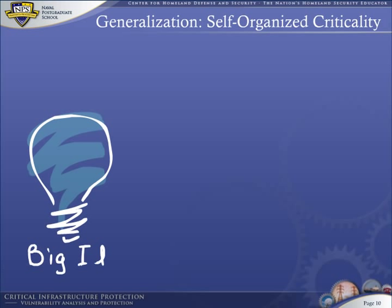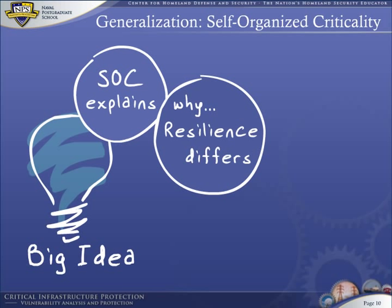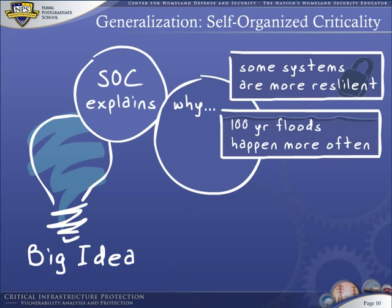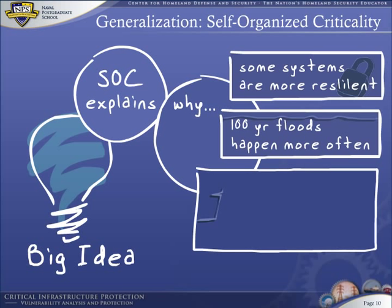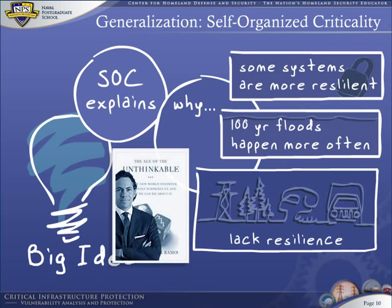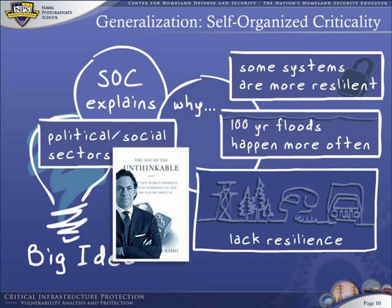Here is the big idea. SOC explains why resilience differs for different critical infrastructure systems. SOC explains why 100-year floods occur more often than every 100 years. SOC explains why some systems are more resilient than others. In special cases, it identifies the reason why power grids, forests, telecommunication systems, and transportation systems are not particularly resilient. Josh Ramo has even applied SOC to the political and social sectors, explaining why we live in the age of the unthinkable.